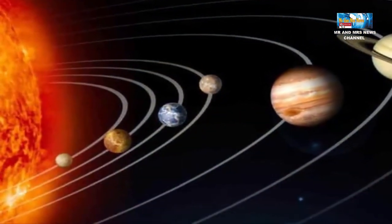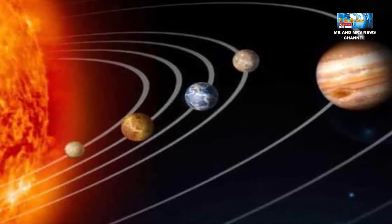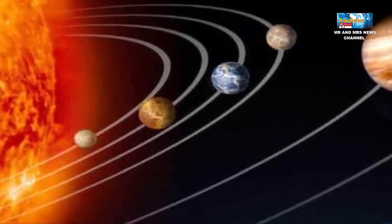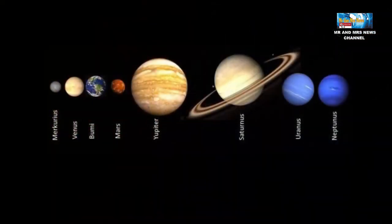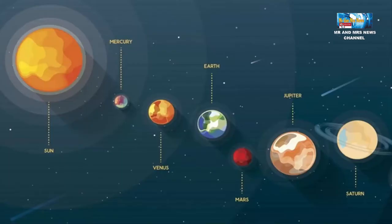Dengan diameter sebesar 4879 km di khatulistiwa, Merkurius adalah planet terkecil dari 4 planet ke Bumi di tata surya. Jarak Merkurius ke matahari 57 juta kilometer dan jarak Merkurius dengan Bumi 92 juta kilometer.